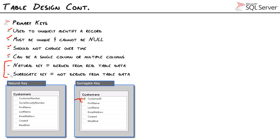Some people live by surrogate keys; others will insist on nothing but a natural key. The real answer is: it depends. A natural key is derived from real table data — like a customer number or social security number, both candidate keys for a customer table. A customer number could be a system-generated number when a customer signs up, but it's still a natural key. A surrogate key is not derived from real table data; it's an artificially produced value — generally either incrementing via an identity column or randomly generated using a globally unique identifier (GUID) column.